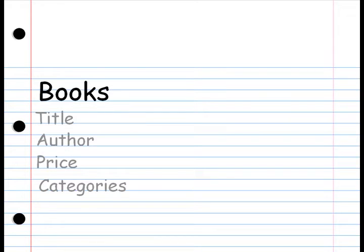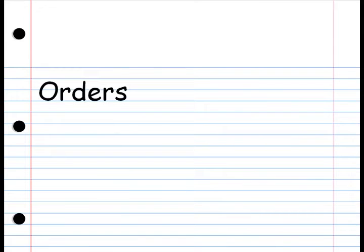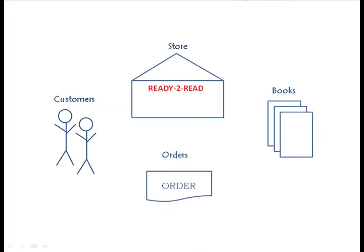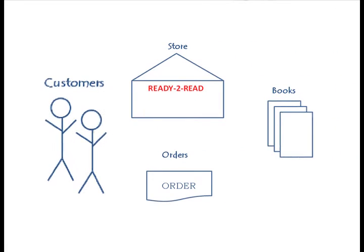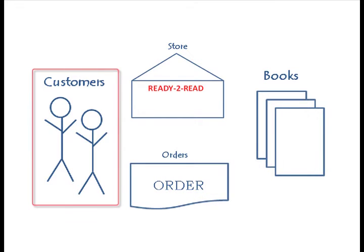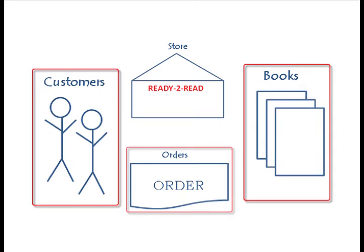Knowing the category will help us pinpoint which types of books sell the best, and we can keep that type of book in stock at all times. Now, what's left? The orders. This is the stage where the customer actually buys the book. I want the orders part of my database to tell me who ordered what and when. A customer finds a book and places an order or makes a purchase. Our database will tell us who they are, what they bought, and when they bought it.